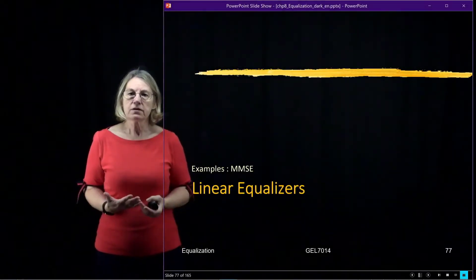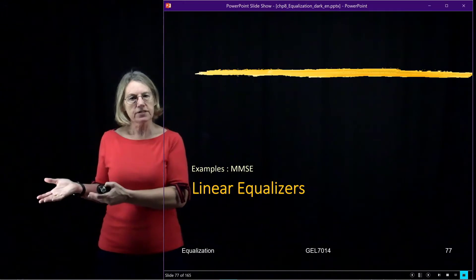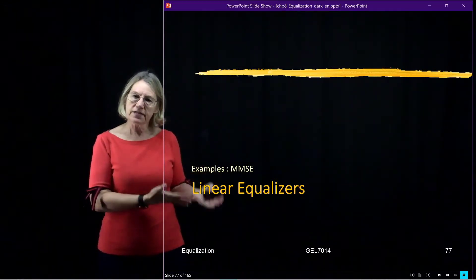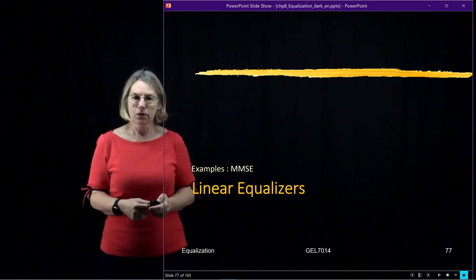So let's look at some examples. We saw examples earlier for the zero-forcing. Now let's see for these examples how the MMSE would perform.